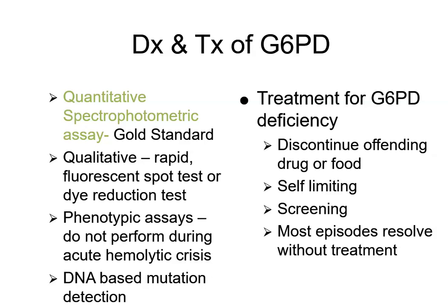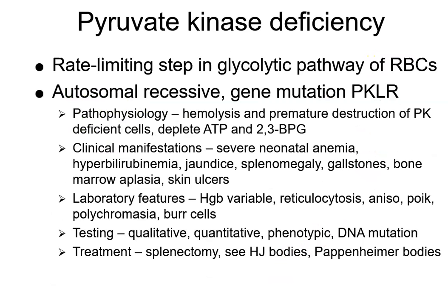To diagnose G6PD deficiency, the quantitative spectrophotometric assay is the gold standard, measured at an absorbance of 340 nanometers. You'll also see decreased haptoglobin, increased bilirubin, and a negative DAT because it's not an immune issue. Treatment: you remove the causative agent. Most episodes are self-limiting and will resolve without any treatment.